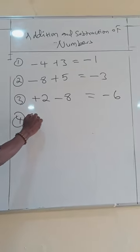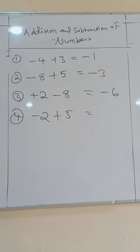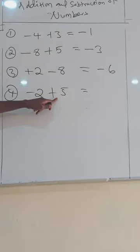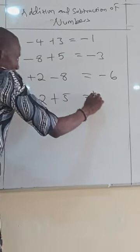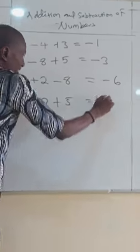Number 4, when you have minus 2 plus 5. You check this number again, which of the signs is having the highest number? Is what? Plus. So your answer will be plus. You find the difference between 5 and 2, which is simply 5 minus 2 is what? 3.